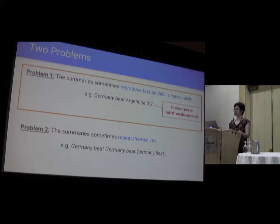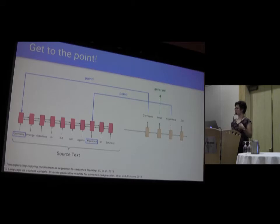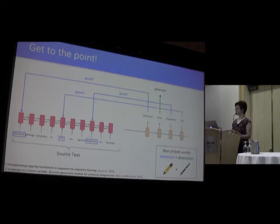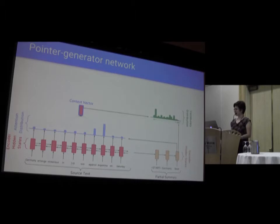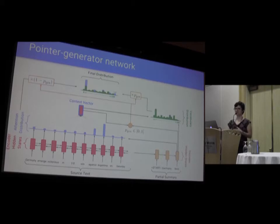Our solution for problem one is to use a pointer to enable us to copy words more easily. Instead of generating each of the summary words, we are able to point to them in the source text — we might point to the word Germany, generate 'beat', point to Argentina, point to 2-0. This is the best of both worlds, because you have both fine-grained extraction with the ability to copy individual words, and you can still abstractively generate. On each step, in addition to getting the attention distribution and the vocabulary distribution, we also generate pgen, the generation probability — a scalar value between 0 and 1 that interpolates between the two distributions. The vocabulary distribution tells us which word we want to generate, and the attention distribution tells us which words we want to point to and therefore copy. Using this switch, we combine the two distributions into the final distribution, and select whichever word has the highest probability as our output.